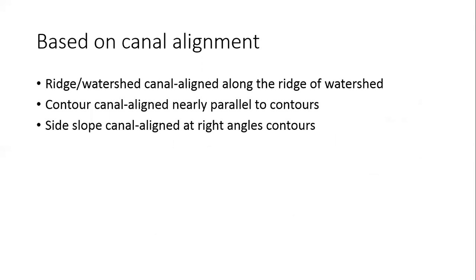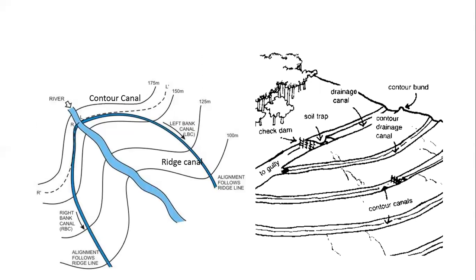Based on canal alignment, we have ridge or watershed canals, which are on the ridge of the watershed; contour canals, which are aligned parallel to the contours; and side slope canals, which are aligned at right angles to the contours — that is, across the slope. For example, here we can see contour canals and a ridge canal through which water is supplied from a river to a field.